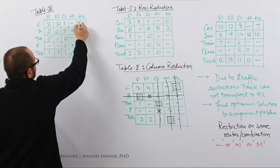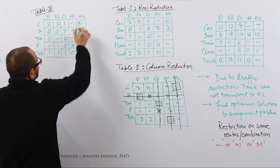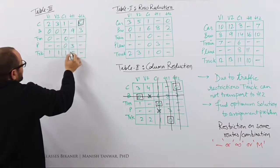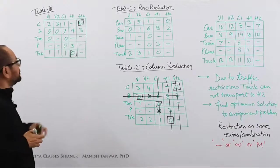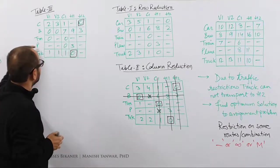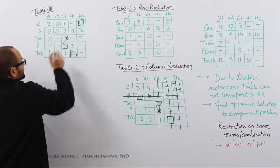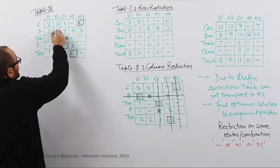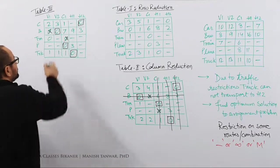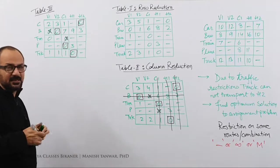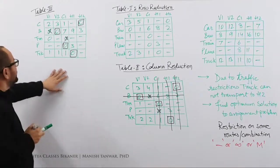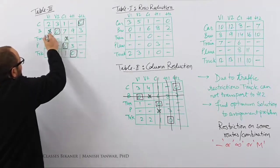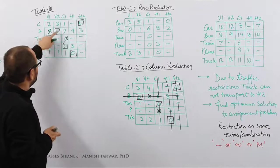From Table 3, we again look for unique zeros and make assignments. We find a unique zero and assign it. Scanning rows we find single zeros and make assignments. Scanning columns we find another single zero and assign. Continuing through the matrix, we complete all 5 assignments: 1, 2, 3, 4, 5.